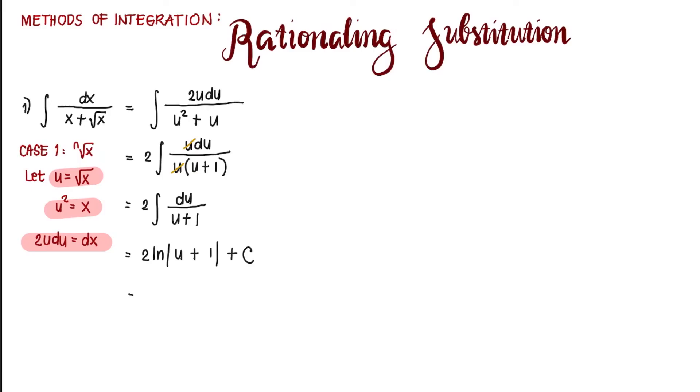But u is equal to square root of x. So substituting, we have 2 ln of square root of x plus 1 plus c.